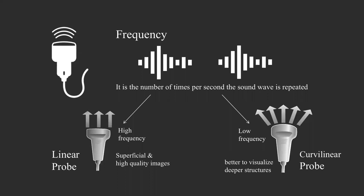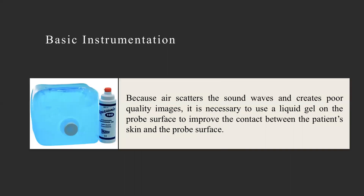Frequency is the number of times per second the sound wave is repeated. The high-frequency linear probe can visualize superficial structures with high quality. The curvilinear or abdominal probe is low frequency and gives better visualization of deeper structures, but with lesser quality for superficial structures. You need to know which probe to use during each examination. There is also the echo probe used for echocardiography.